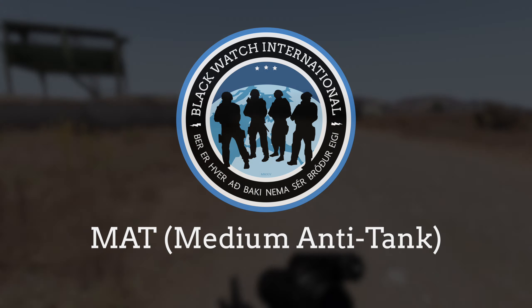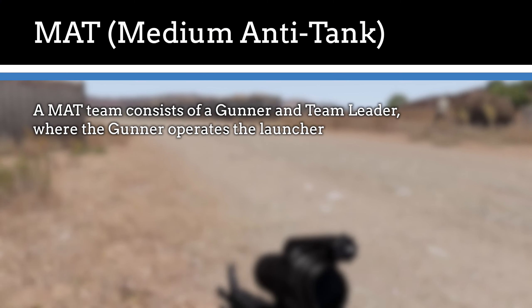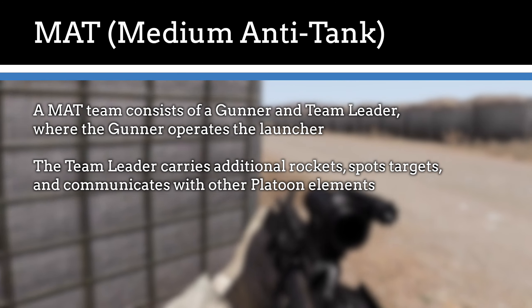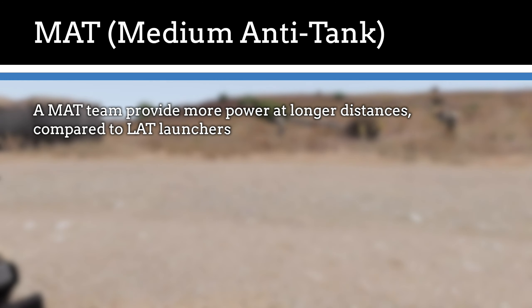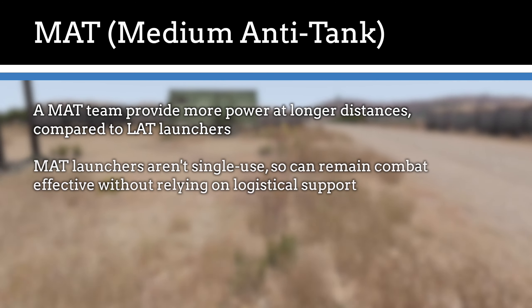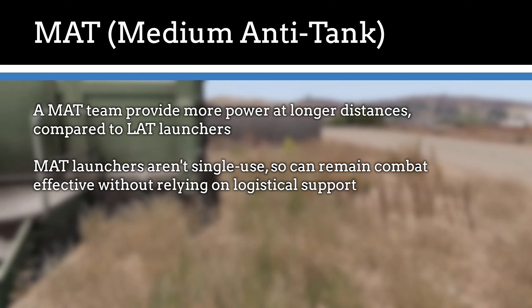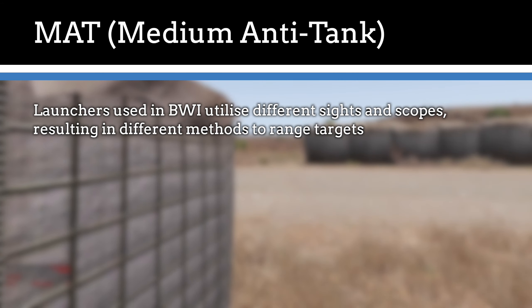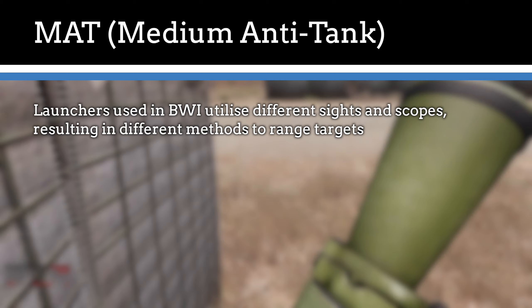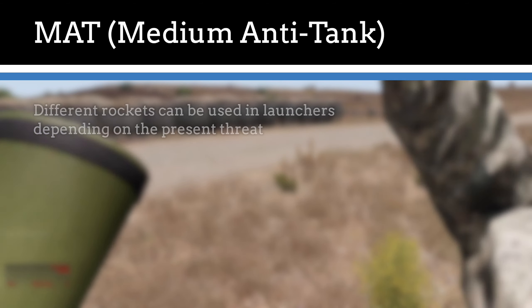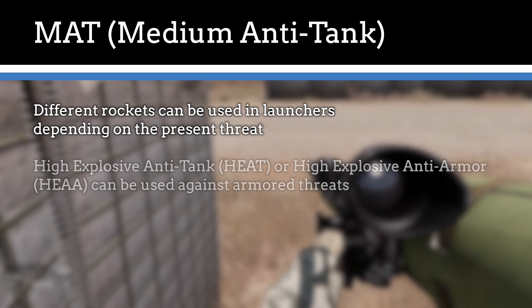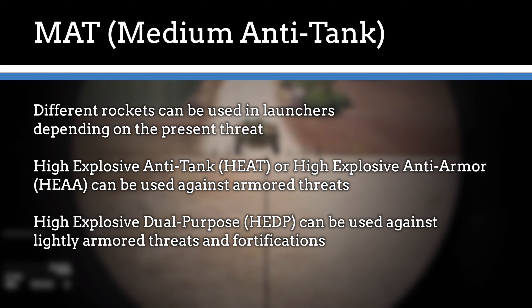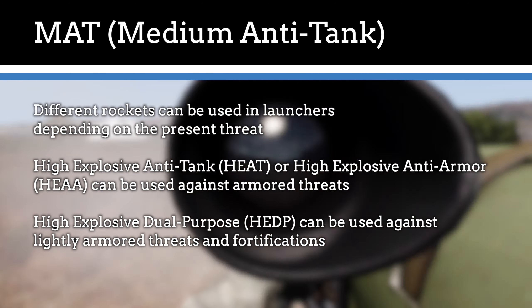Medium anti-tank. A medium anti-tank launcher is operated by a two-man crew consisting of a gunner who operates the launcher and a team leader who carries additional rockets, assists in spotting and ranging enemies, and carries a long wave radio to communicate with other elements. MAT teams offer enhanced power and range compared to most lighter launchers, as well as being able to reload rounds without requiring a replacement tube. There are several MAT launchers in use in Blackwatch. The M3 Moz as well as the Mark 153 Small both use standard scopes that can be ranged up and down using the Page Up and Page Down keys. These launchers can be loaded with two different types of rockets: high explosive anti-tank or anti-armor rounds, which can be used to take down armored threats, and high explosive dual purpose rockets, which can be used against lightly armored threats as well as structures and fortifications.